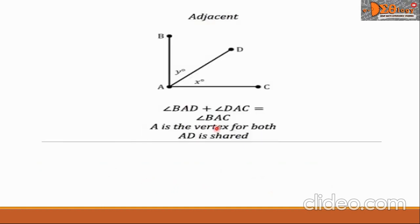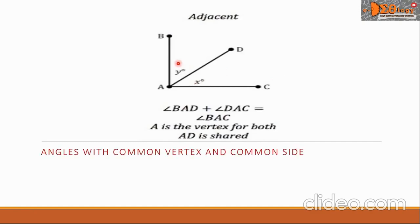Another group is called adjacent angles. The common vertex is point A, and the common side is side AD.